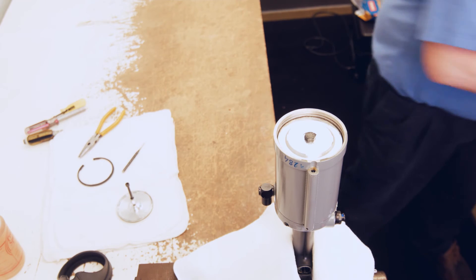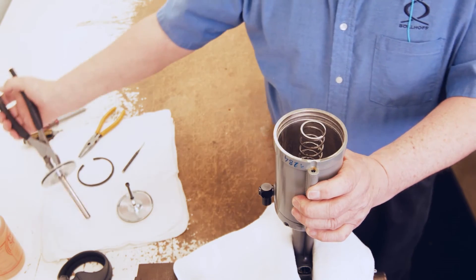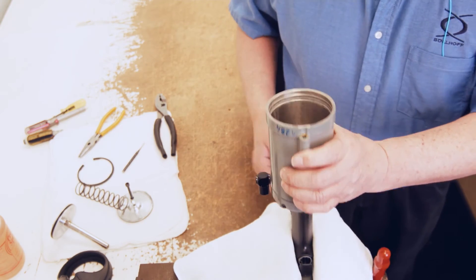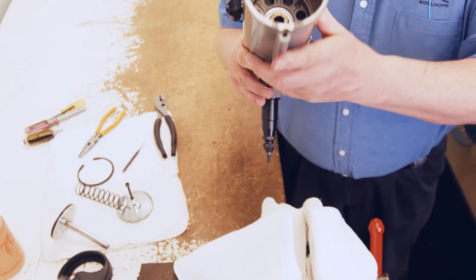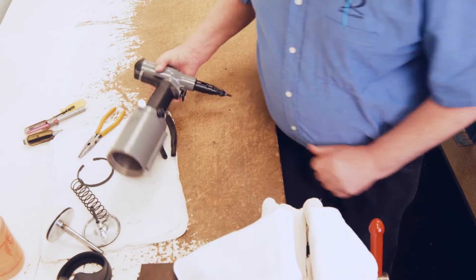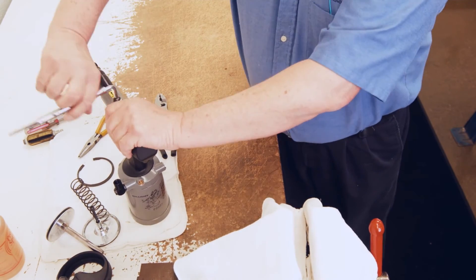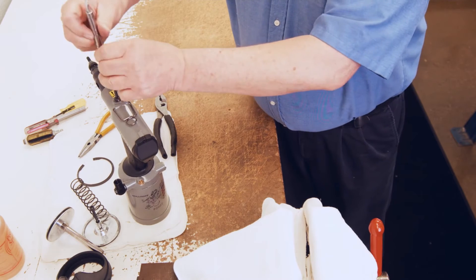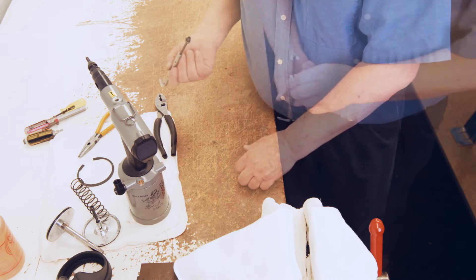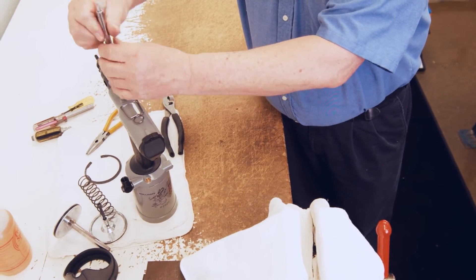Step six, remove the piston and spring. Step seven, drain the oil and let sit for 10 minutes. While draining, remove the screw on the top of the gun to ensure all air escapes.